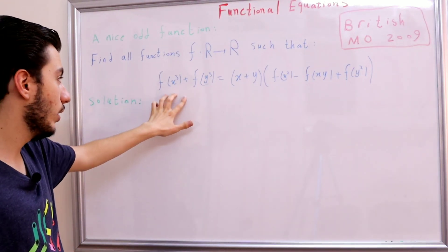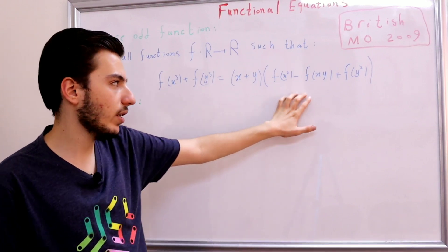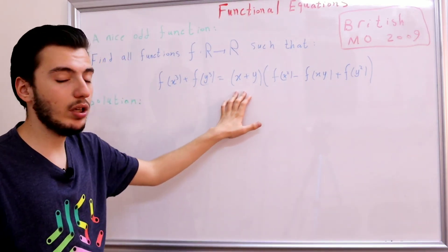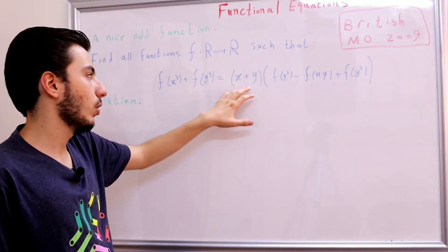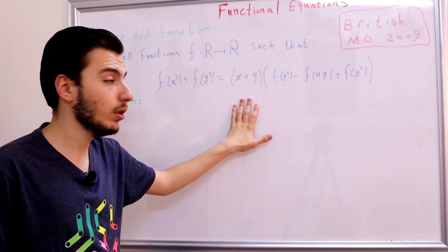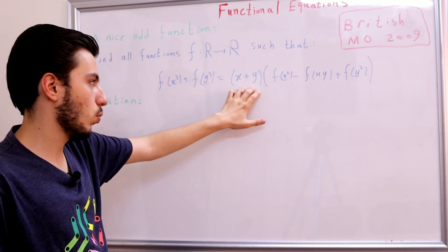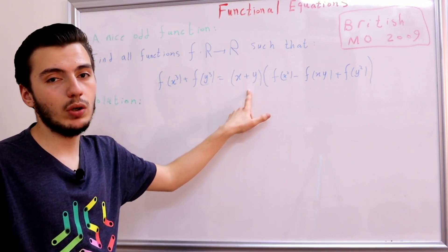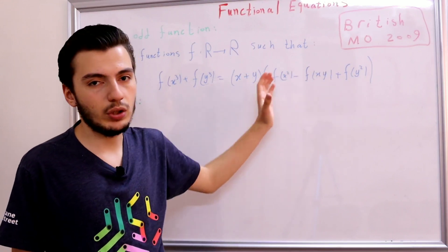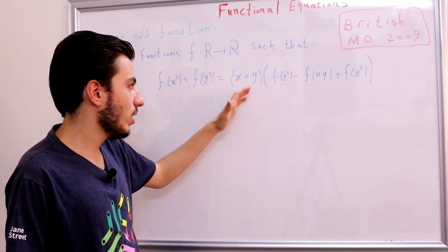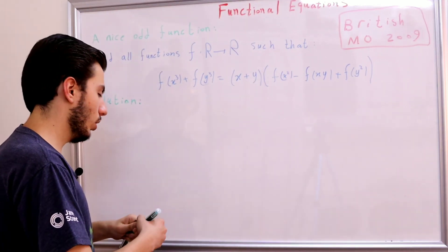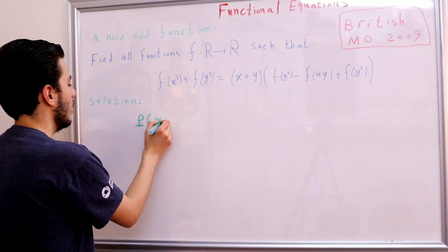On the left-hand side we have f(x³) + f(y³). On the right-hand side we have a product of two terms — three f's — and a very nice free quantity which is (x + y). Since (x + y) is a free quantity, we can set x + y = 0. If we do that, the right-hand side becomes 0, and so does the left-hand side. So let's make our first substitution: P(x, -x).